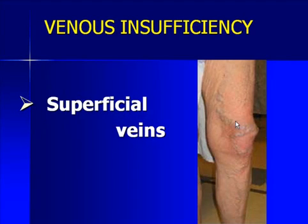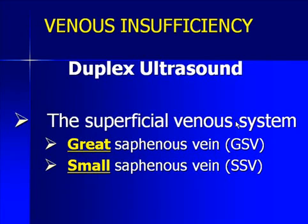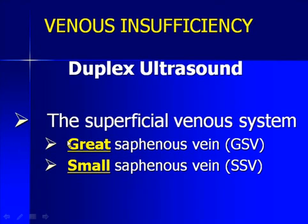When looking at the superficial veins, we talk about the great saphenous and the small saphenous veins. I bring that up because we've had a terminology problem over the years. In the United States previously, we had a greater saphenous and a lesser saphenous vein, the lesser saphenous being the one along the posterior calf in the superficial system.